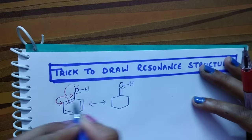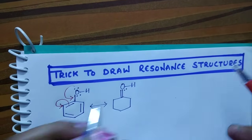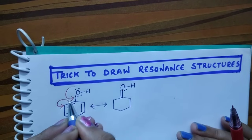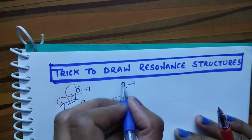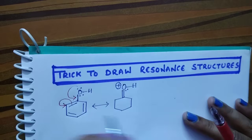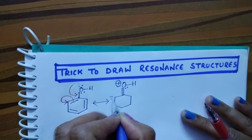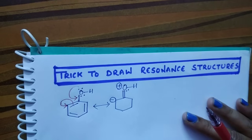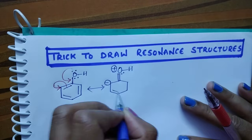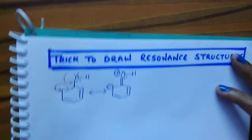Whenever oxygen — more electronegative atoms like oxygen — when their octet is completed by donating one of their lone pairs, they get a positive charge. And whenever these two electrons shift here, this carbon gets a negative charge, and these two bonds are as-is — you have to write them.